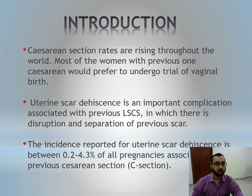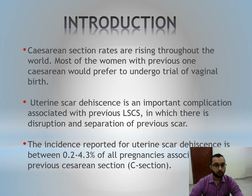Coming to the introduction part. C-section rates are rising throughout the world. Most of the women with previous one C-section would prefer to undergo trial of vaginal birth. Uterine scar dehiscence is an important complication associated with previous LSCS, in which there is disruption and separation of the previous scar. The incidence reported for LSCS is between 0.2 to 4.3% of all pregnancies associated with previous C-section.